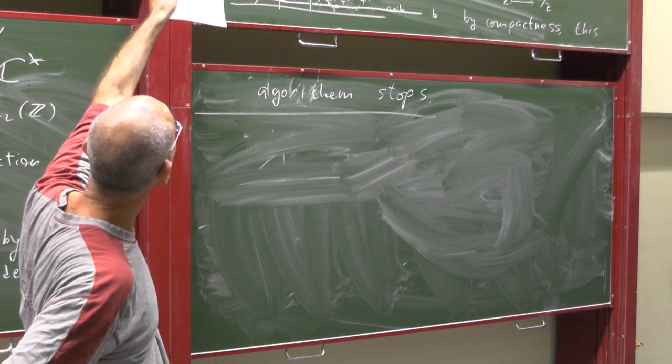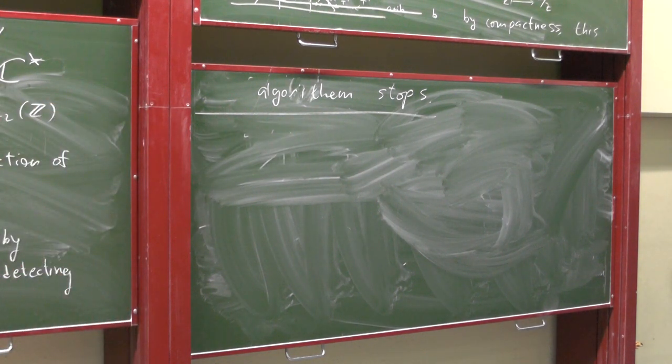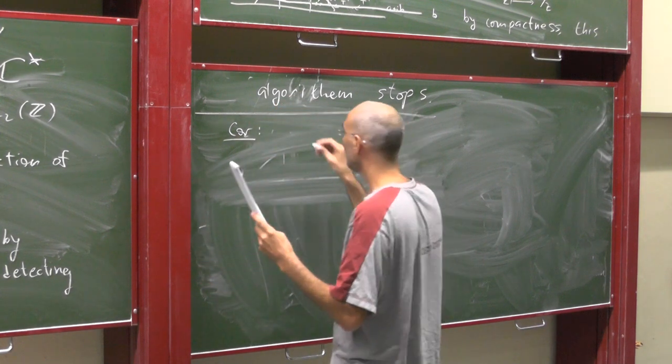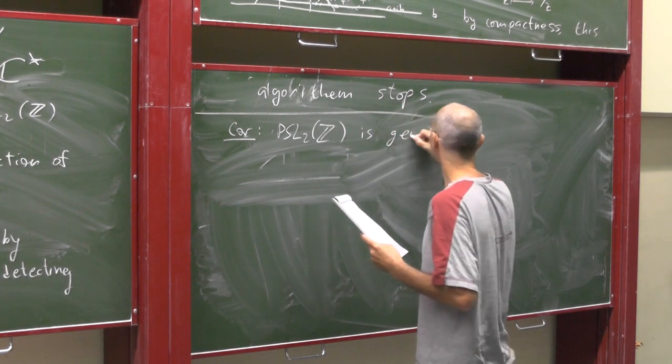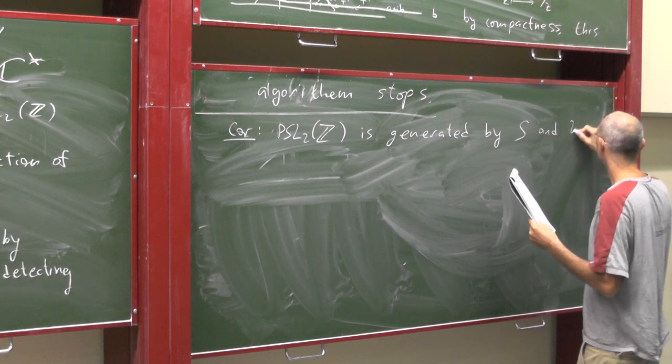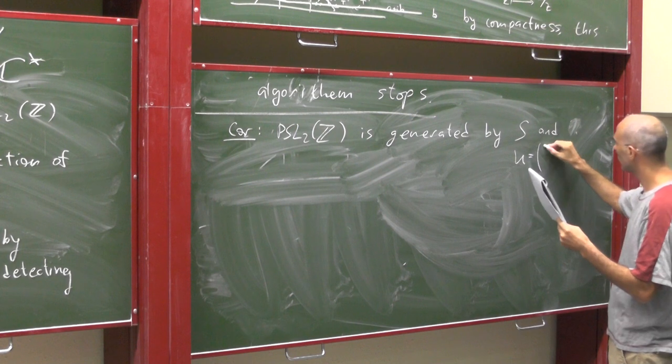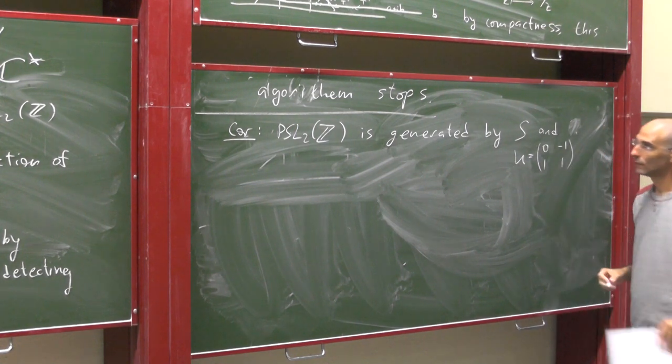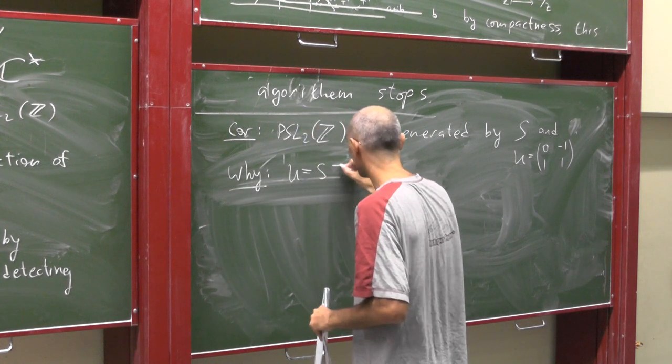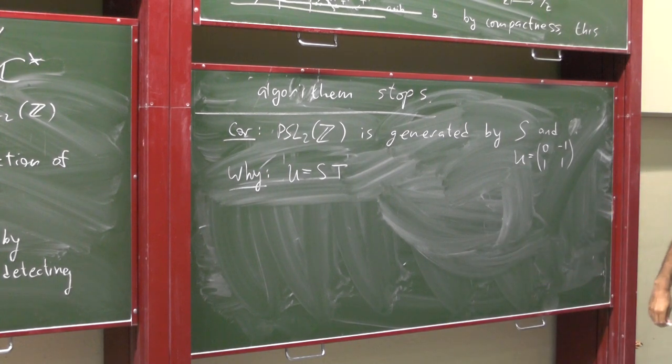Now I am rushing because I want to do some other things in my next talks, but I do want to give you a more precise structure theory for PSL2Z, not just that it is finitely generated or generated by these two elements, but I want to give the exact structure of it. So before this, as a corollary, PSL2Z is generated by S and U, which I'm writing down here. Because U is just S times T, so I can reconstruct T as S times U.